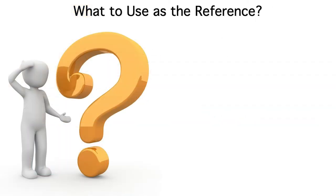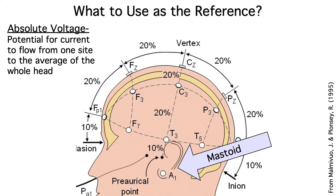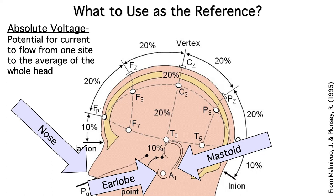So what location should be used as the reference? A lot of people use the average of the mastoids or the average of the earlobes. Some people use the tip of the nose. All of these reference locations became popular many decades ago because they seemed like they'd be electrically neutral.